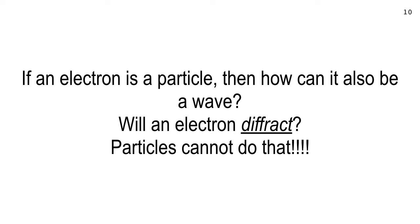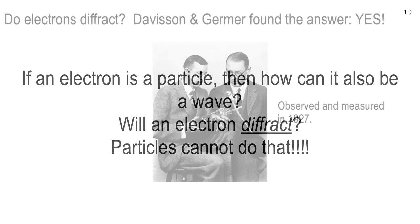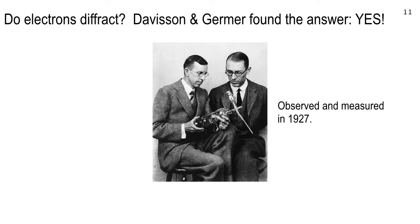If de Broglie is right, a free electron — not bound to a nucleus like in a hydrogen atom — ought to diffract, if you can find the right size diffraction grating. And yes, they were able to observe it. The diffraction grating they used was crystals of nickel. These are the two guys who verified the hypothesis. They saw it around 1927, just about the same time de Broglie was developing his theory.